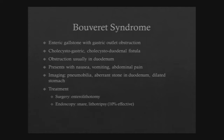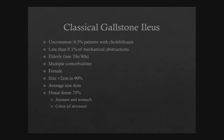Classical gallstone ileus, more like what our patient had, is rather uncommon — approximately 3 in 1,000 patients with gallstones may present with this, and less than 1 in 1,000 small bowel obstructions will result from this. These are typically elderly patients in their 70s and 80s with multiple comorbidities. More commonly seen in females. They usually have a stone greater than 2 centimeters, with average size about 4 centimeters. The most common place these stones lodge is in the distal ileum, next most common being the jejunum or stomach.